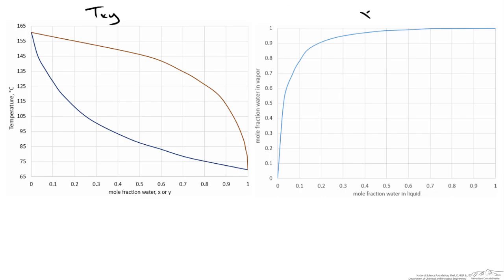So on the left we have our T-xy diagram, and on our right we have our xy diagram. On the x-axis is the mole fraction of water in the liquid, on the y-axis is the mole fraction in the vapor. And again we get this because at any given temperature, 125, we get a point for our mole fraction in the liquid phase of just above 0.1, so that puts us right around here.